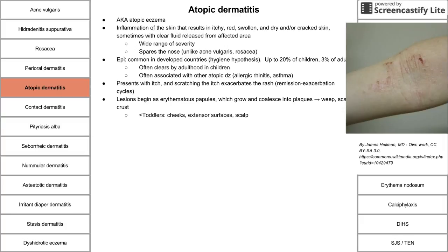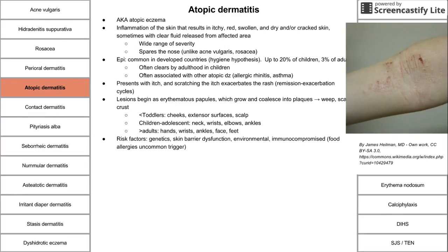In babies to toddlers, atopic dermatitis usually affects the cheeks, extensor surfaces, and scalp. In children and adolescents, it presents on the neck, wrists, elbows, and ankles. In adults, it usually presents on the hands, wrists, ankles, face, and feet. Risk factors include genetics, skin barrier dysfunction, and environmental factors; it tends to occur more in immunocompromised people.